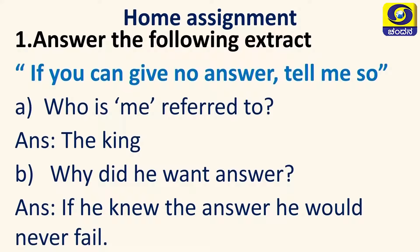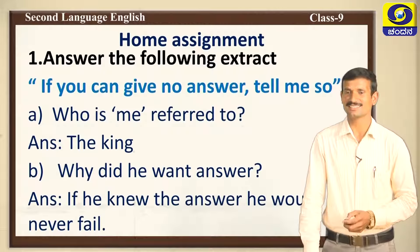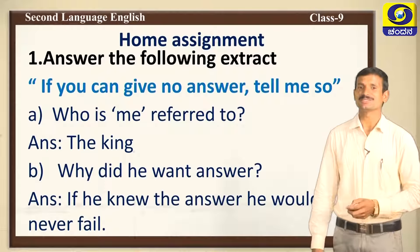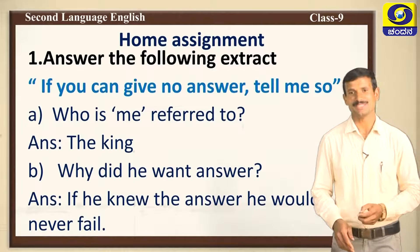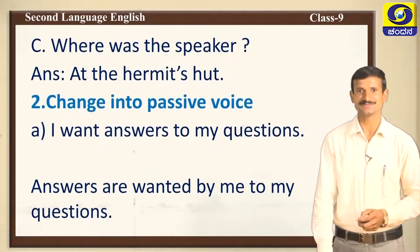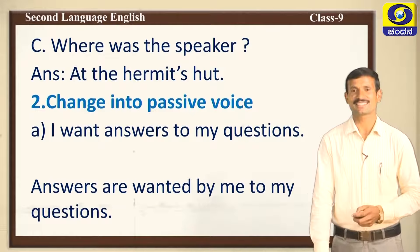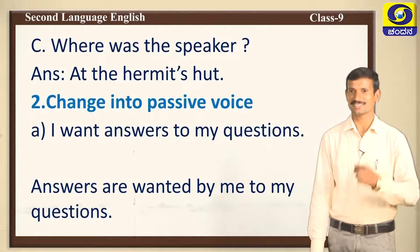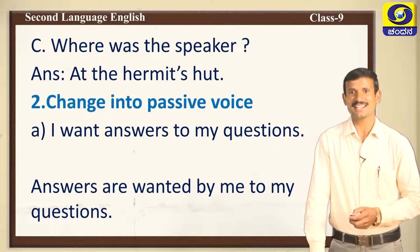Answer the following extract: 'If you can give no answer, tell me.' Who said this? Who is the speaker of the sentence? Very good — the king. Why did he want the answer? If he knew the answer, he would never fail in his kingdom. Next, where was the speaker? Very good — the speaker was at the hermit's halt. These are the questions from the first session.